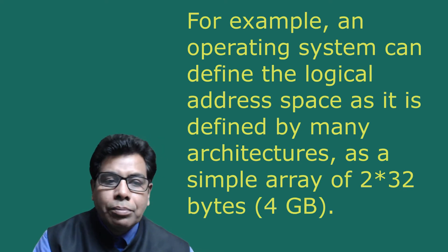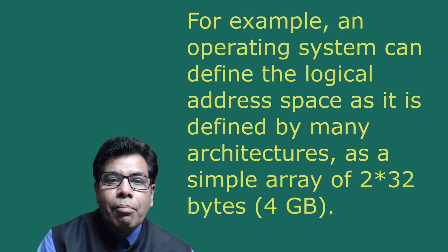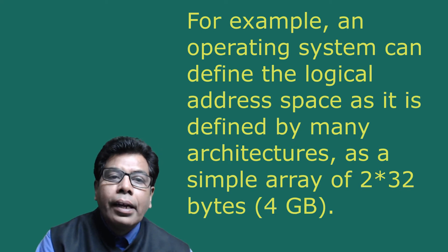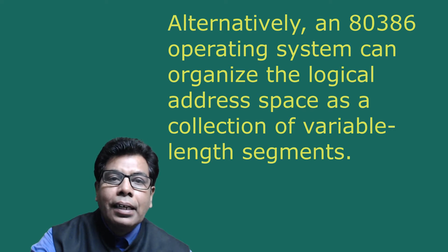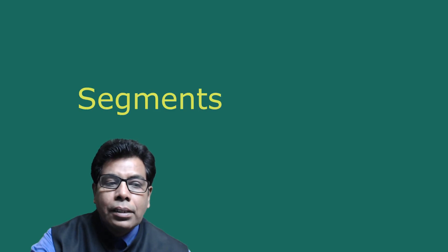An 80386 operating system can tailor an application program's view of its logical address space. For example, an operating system can define the logical address space as a simple array of 2 raised to 32 bytes, or 4GB. Alternatively, an 80386 operating system can organize the logical address space as a collection of variable-length segments. The 80386 does not dictate the use of segments — it is flexible but allows them to be used as they support application needs.